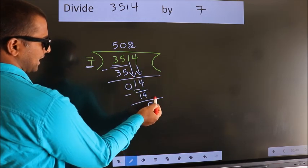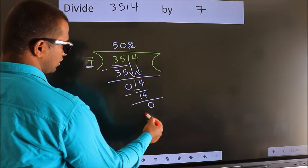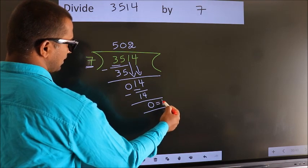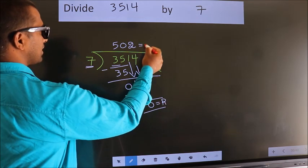No more numbers to bring down. So we stop here. This is our remainder. This is our quotient.